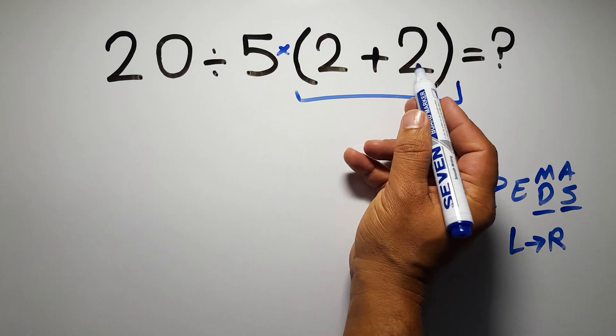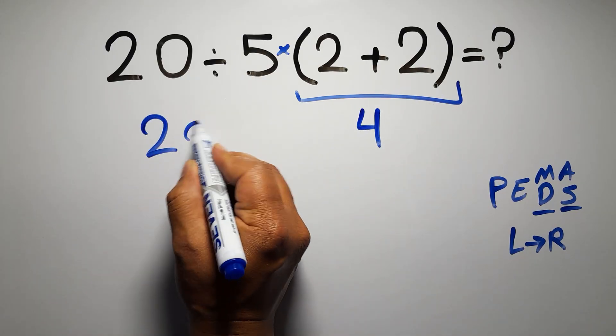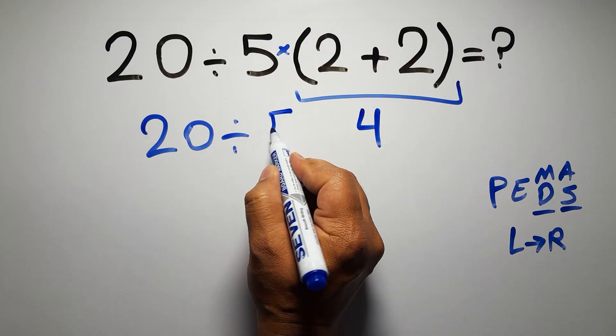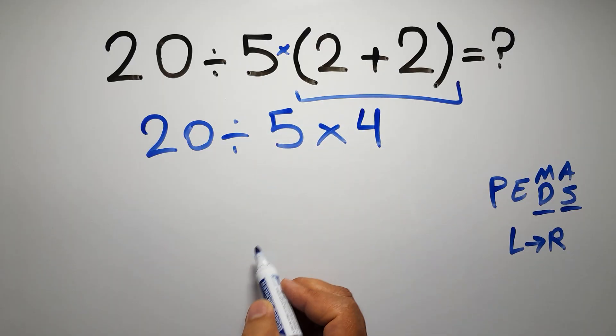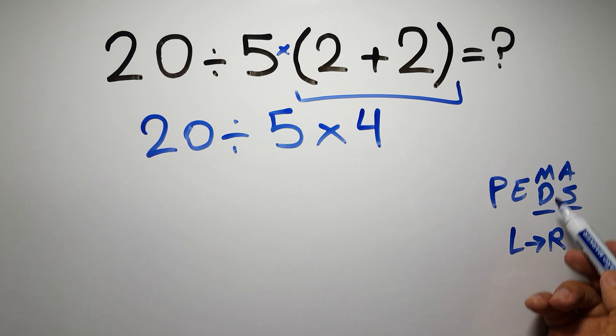Inside this parentheses we have 2 plus 2 which equals 4. So 20 divided by 5 times 4. Now we have one division and one multiplication. As I said, multiplication and division have equal priority and we have to work from